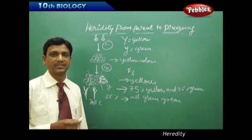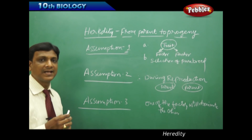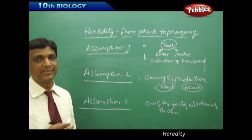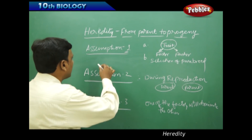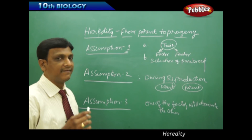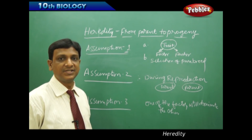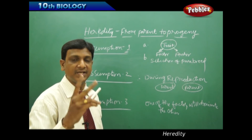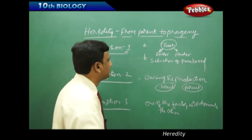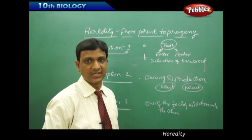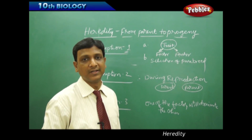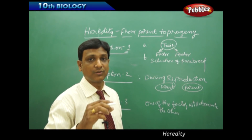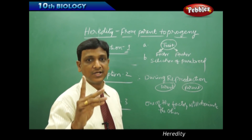Now let us see the assumptions of this experiment. Mendel conducted experiments and drew certain results. Based on the results and observations, he made certain assumptions. The first assumption is that every trait or property is represented by two factors. Behind a trait or a property there are always two factors. When he selected contrasting characters like yellow color peas or green color peas, for that character how many factors will there be? Two factors.